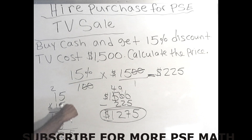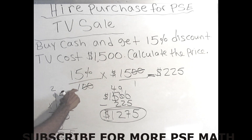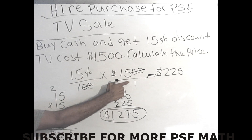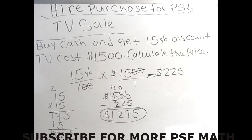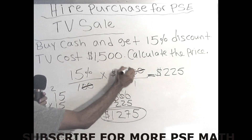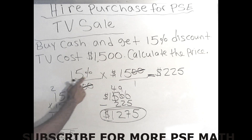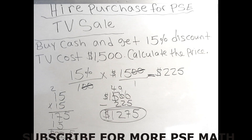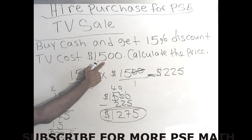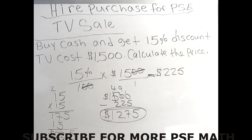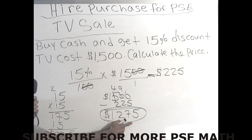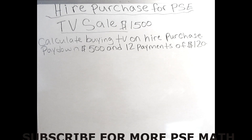What we did in this problem was first find out what 15% of the TV price is, because they gave us a 15% discount. We set it up as 15% over 100 times $1500. We had two zeros at the bottom, so we cancelled two zeros at the top. Multiplying 15 times 15 gives us $225. To finalize: the TV price of $1500 minus the $225 discount gives us the cash price of one thousand two hundred and seventy-five dollars.